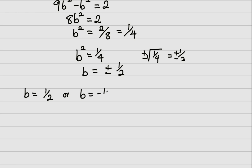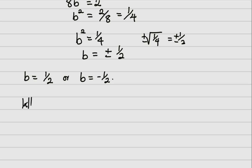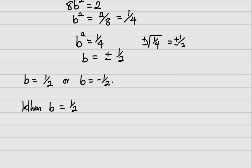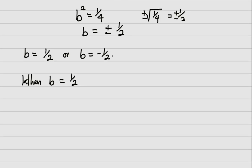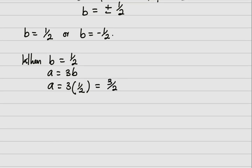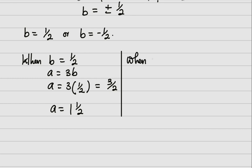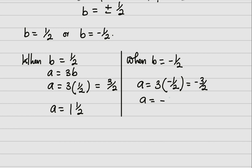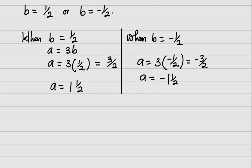So b equals one half, or b equals negative one half. When b equals one half, recall a equals 3b, so a equals 3 times one half, which gives a equals three over two, or one and a half. When b equals negative one half, a equals 3 times negative one half, which gives a equals negative three over two, or negative one and a half.